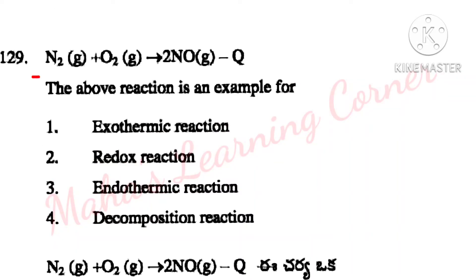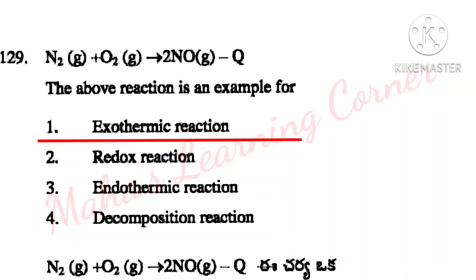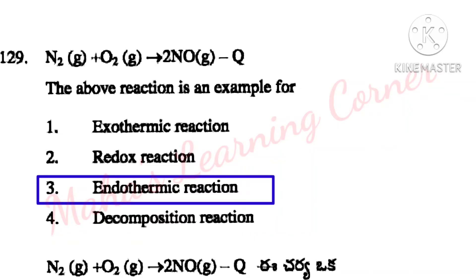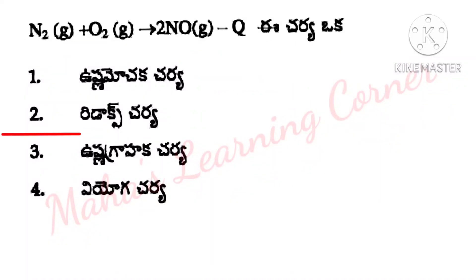N₂ + O₂ → 2NO. The above reaction is an example of? Options: Exothermic reaction, Redox reaction, Endothermic reaction, Decomposition reaction. Correct answer: Option 3 — Endothermic reaction.